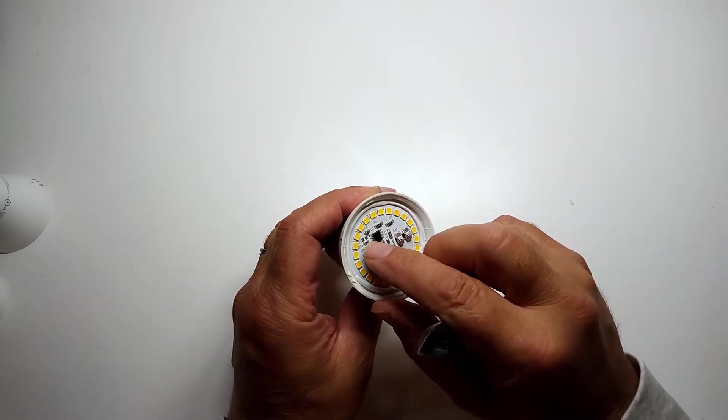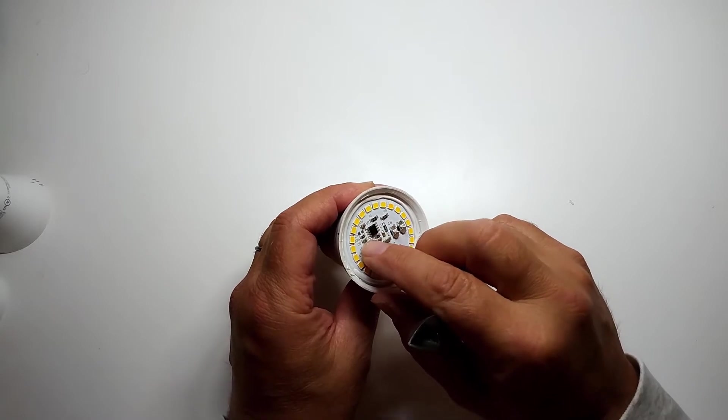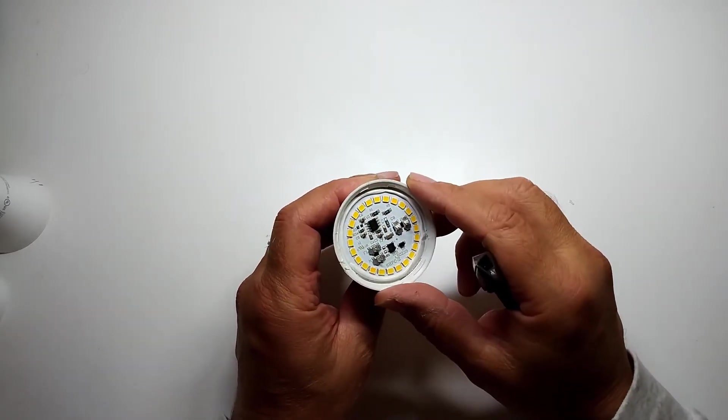On the 12-watt bulb the two resistors are here and here, and you can see I have removed one of them. Thus effectively more than doubling the life of the bulb.